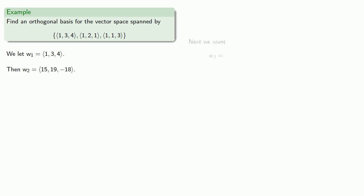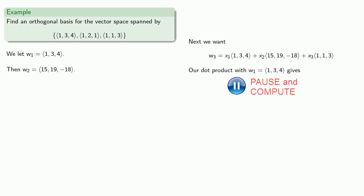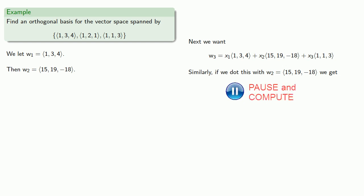Next, we want our third orthogonal vector to be a linear combination of the first two orthogonal vectors and the vector in the original set that we're replacing. Again, because we're supposed to have orthogonality, our dot product with w1 gives us... And if we dot this with w2, we get...